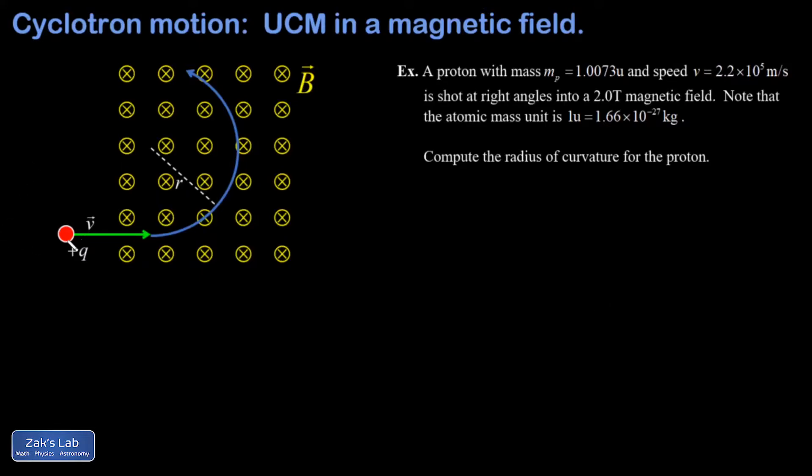In the diagram, I have a particle with a positive charge on it, and it's moving with a speed of v perfectly to the right when it enters this magnetic field that's pointing inward. That's what the x's mean for the direction.